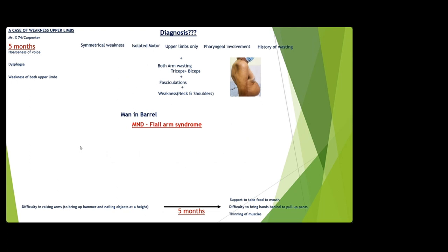Bulbar palsy has a bad prognosis. Pseudobulbar palsy also has a bad prognosis. Progressive muscular atrophy has a better prognosis. Flail arm syndrome usually stabilizes by itself, but leaves behind some residual weakness.